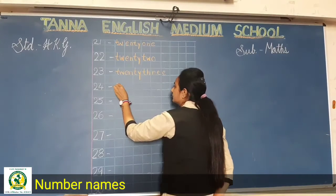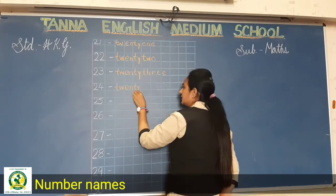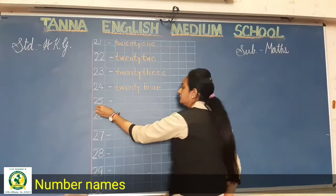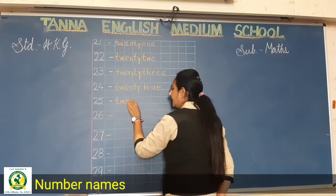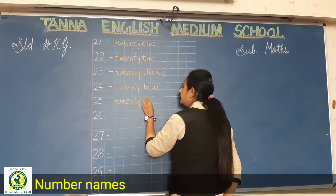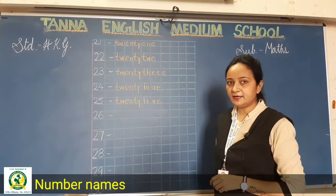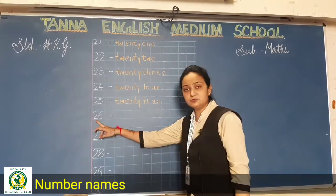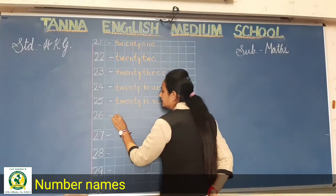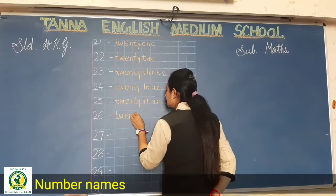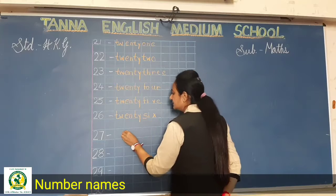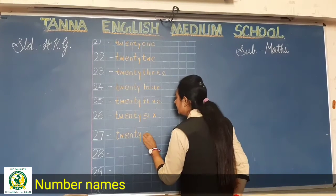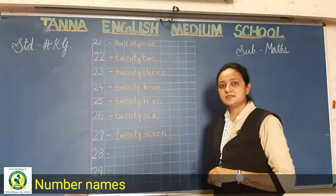For 24: T-W-E-N-T-Y and F-O-U-R. For 25: T-W-E-N-T-Y and F-I-V-E. Are you writing with me? Very good — write with good handwriting. For 26: T-W-E-N-T-Y and S-I-X. For 27: T-W-E-N-T-Y and S-E-V-E-N.